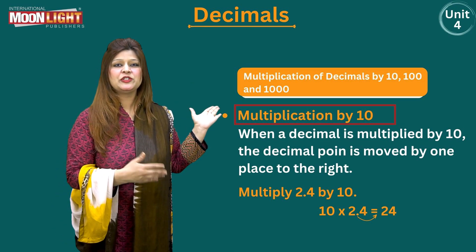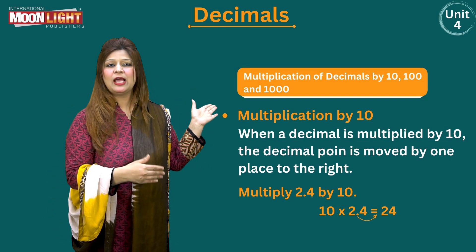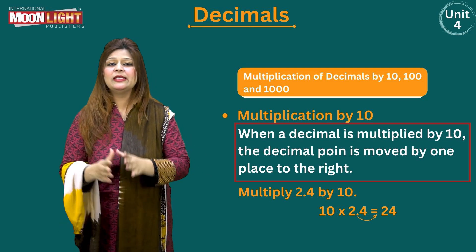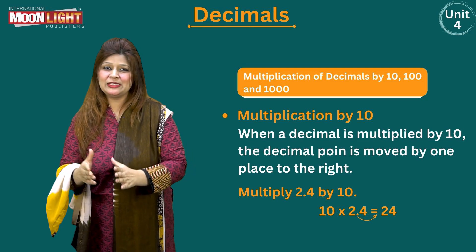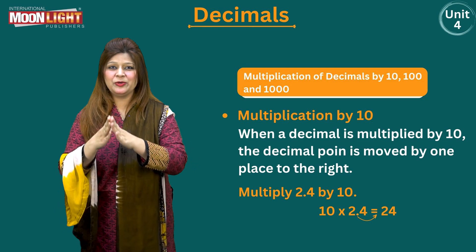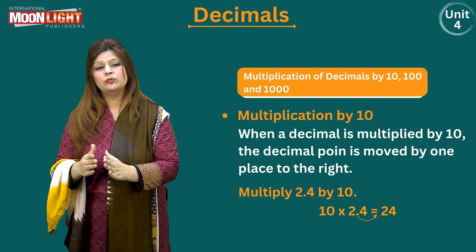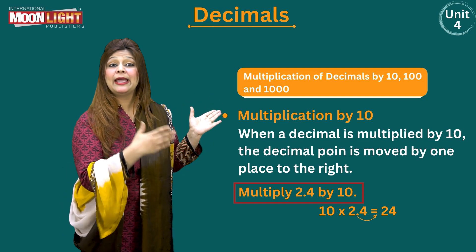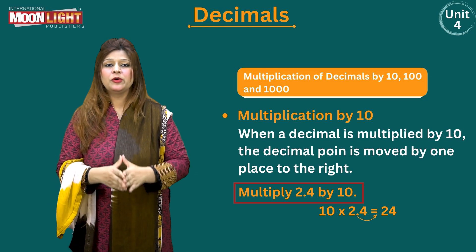Right now we are going to do multiplication of decimals by ten, hundred, and one thousand. First, for multiplication by ten, you need to know a rule. When a decimal is multiplied by ten, the decimal point moves to the right. This movement is according to the place values of decimals. The number of places the decimal point moves depends on the number of zeros — so for ten, which has one zero, the decimal point moves one place to the right.